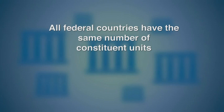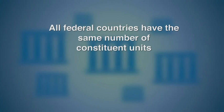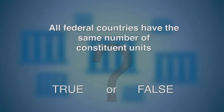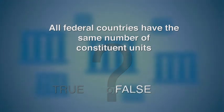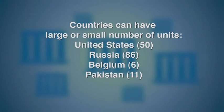Statement two: All federal countries have the same number of constituent units. That is false. Some countries have a large number of constituent units, such as the United States with 50 states, or Russia with 86 constituent units. Others have few, such as Belgium with six, or Pakistan with four provinces, six tribal areas, and one capital district.